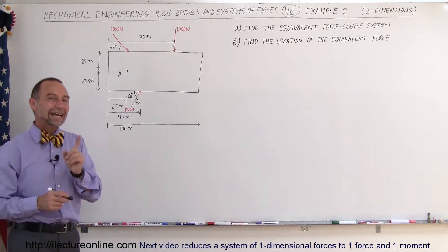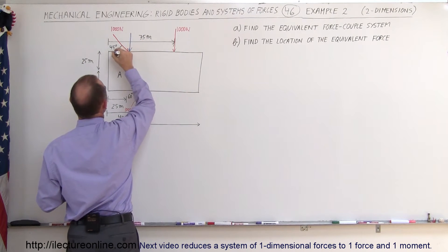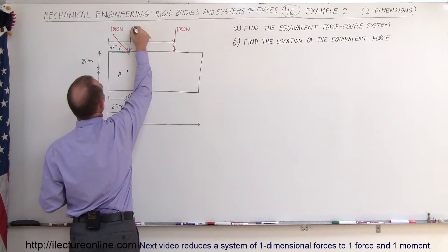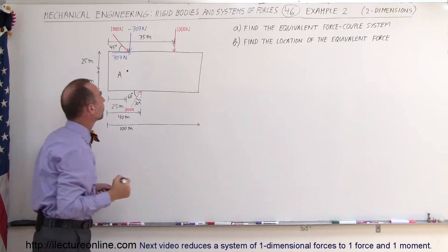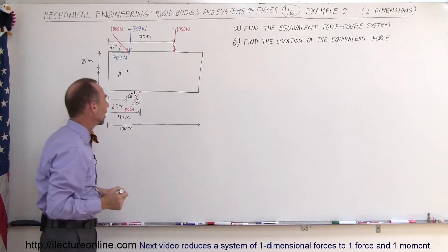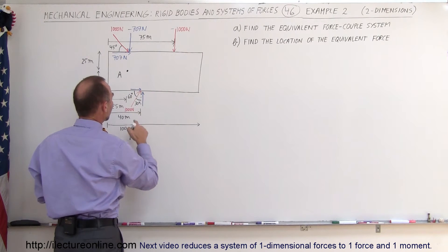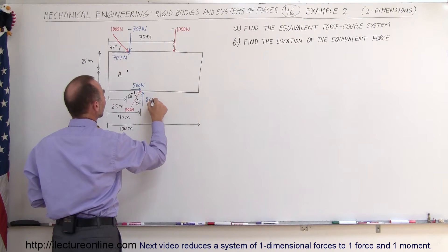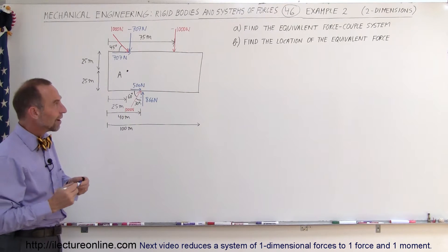First, we find the X and Y components of each force. At a 45-degree angle, the X and Y components are equal — each is 707 Newtons. The X component is in the negative direction, so that's negative 707 Newtons. The second force is entirely in the Y direction: minus 1000 Newtons. The third force at 30 degrees has a positive X component of 500 Newtons and a positive Y component of 866 Newtons.